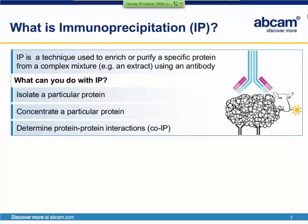What can you do with IP? You can isolate a protein from a complex mixture to then use in other assays. It can also be used to concentrate the protein. For instance, if your protein is expressed at very low level, IP might be required to visualize it in western blot.